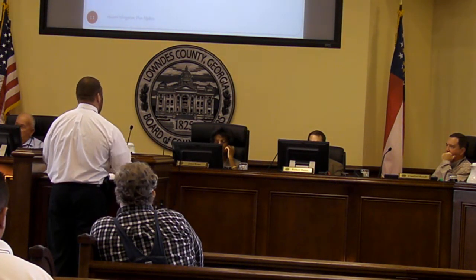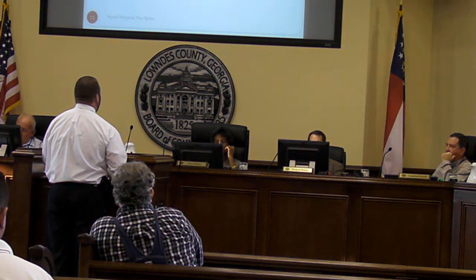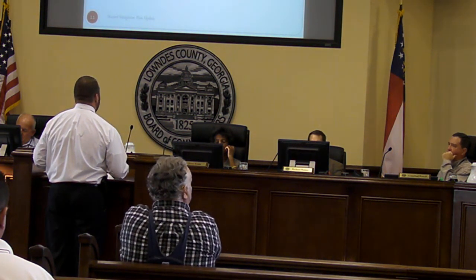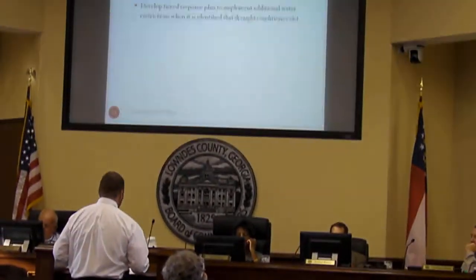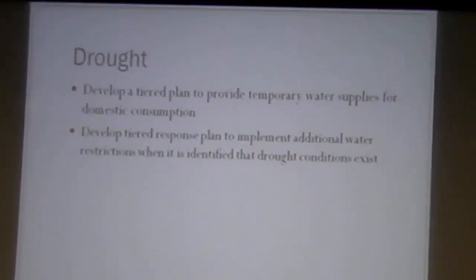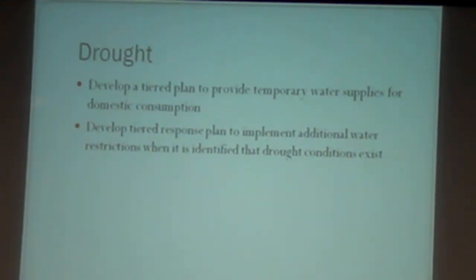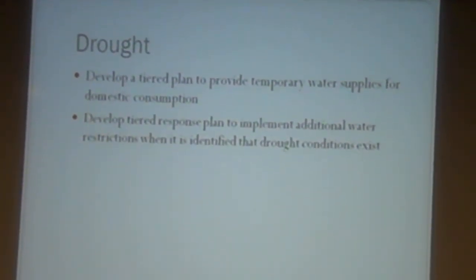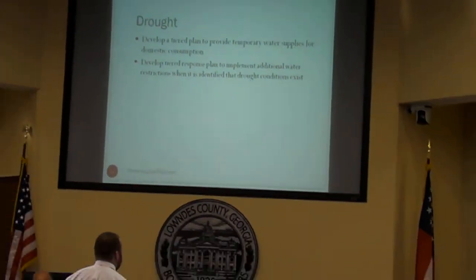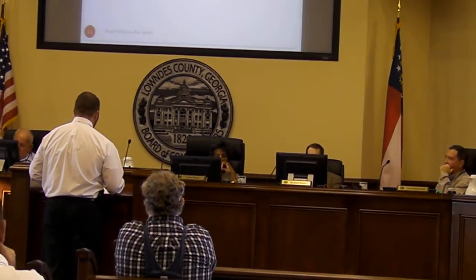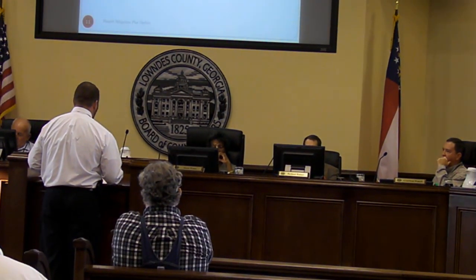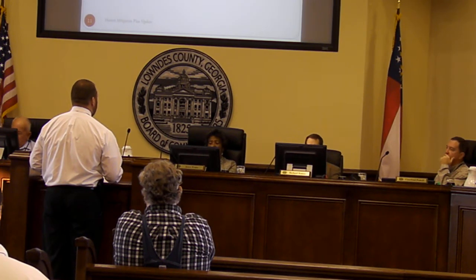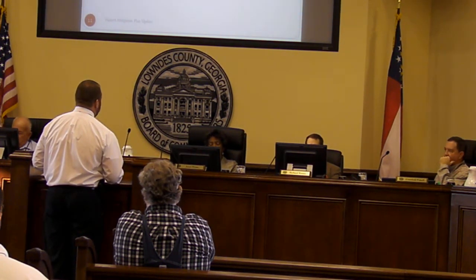Drought is something we're currently facing. There's not a lot you can do — you can't make it rain — so it's basically about conservation on the front end. We just want to make sure we have plans in place so that if we do have a significant drought affecting our domestic water consumption, people at least have drinking water. We're also developing a response plan to implement additional water restrictions if drought conditions exist.